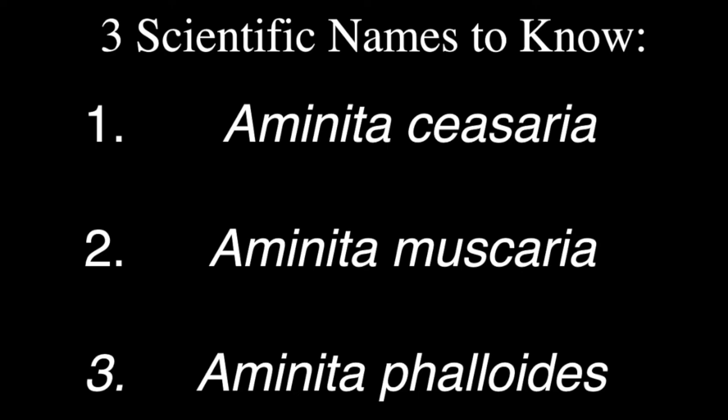Three genus-species scientific names you need to know are Amanita caesarea, Amanita muscaria, and Amanita phalloides. Amanita caesarea is an edible mushroom. Amanita muscaria causes hallucinations, and Amanita phalloides is called the death angel — it causes death. It's remarkable that all three are in the same genus, yet each species has a completely different character trait: causing death, hallucinations, or being completely edible.